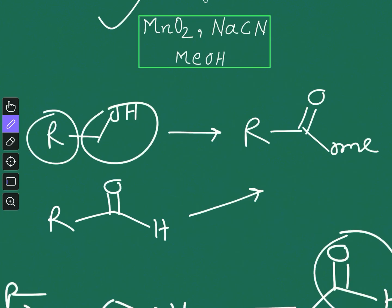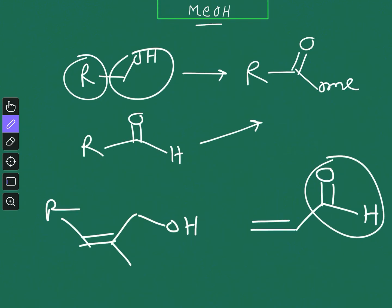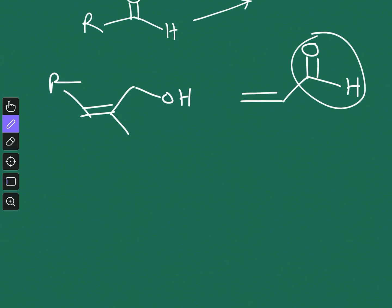That is the one criteria which is needed for this reaction and the reagent combination is manganese dioxide, sodium cyanide, and methanol. Let us now see how the reaction occurs. First we will see the case of alcohol. Let's say you have this allylic alcohol and you have MnO2. We know that MnO2 is used for selective oxidation of allylic alcohol. So this allylic alcohol will be readily oxidized to your aldehyde.